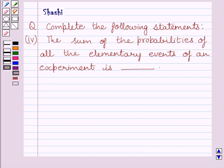Hi and welcome to the session. Let us discuss the following question. Question says, complete the following statements. Fourth part is, the sum of the probabilities of all the elementary events of an experiment is dash.